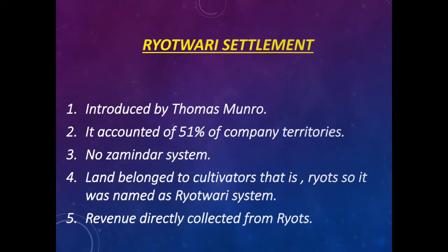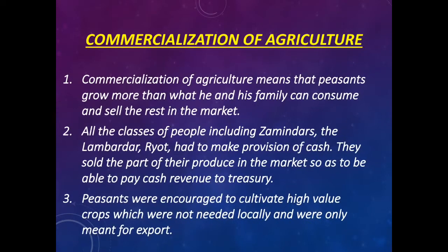Next is commercialization of agriculture. Commercialization of agriculture means that peasants grow more than what they and their family can consume and sell the rest in the market. All classes of people including zamindars, the lambardar, and ryots had to make provision of cash. They sold part of their produce in the market so as to be able to pay cash revenue to the treasury. Peasants were encouraged to cultivate high-value crops which were not needed locally and were only meant for export.